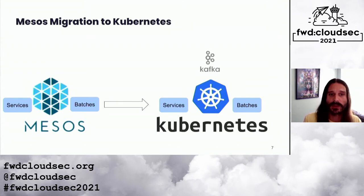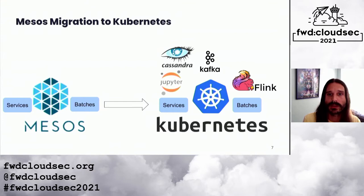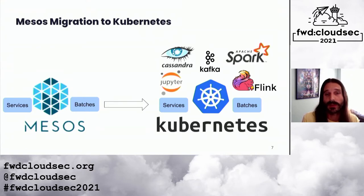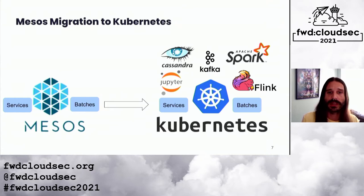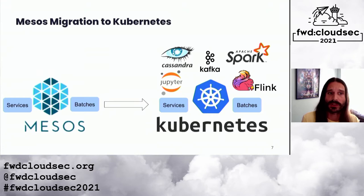These developers would need to interact with different namespaces and resources depending on their use case. Additionally, service and batch workload owners were excited to take advantage of the Kubernetes CLI for more sophisticated types of debugging that were not possible in the Mesos infrastructure, such as remotely executing into their service container to investigate issues live in production.